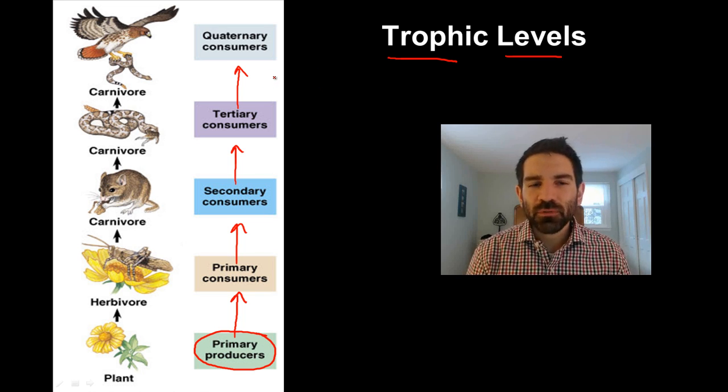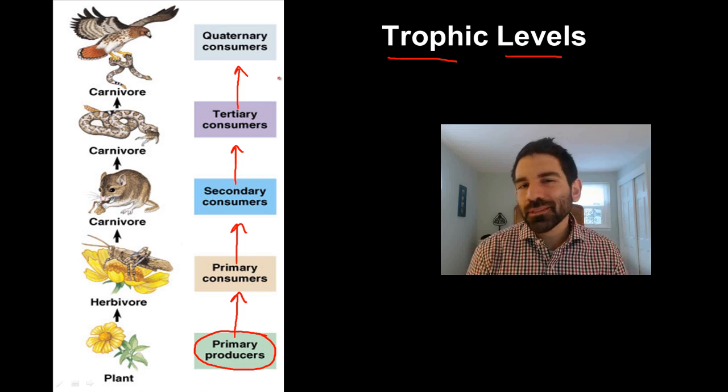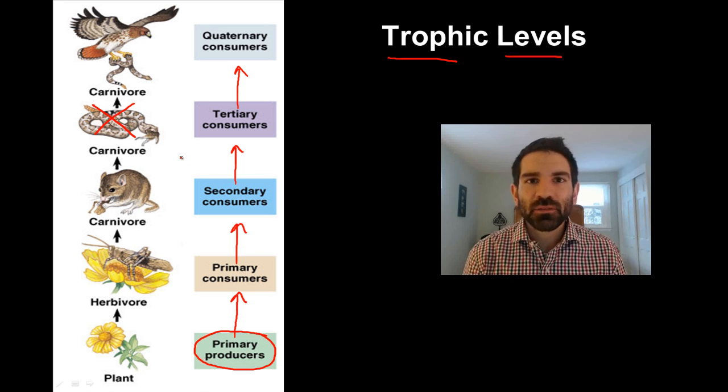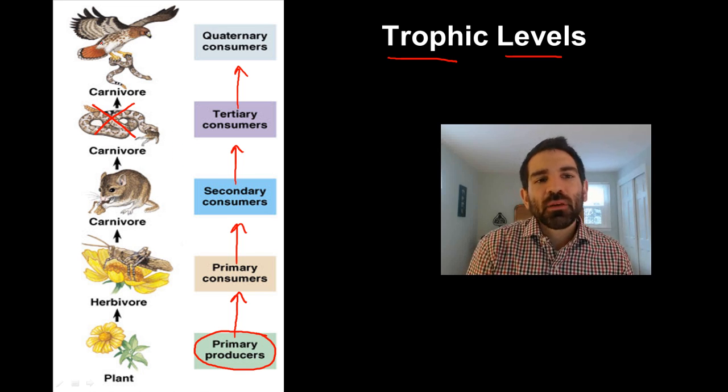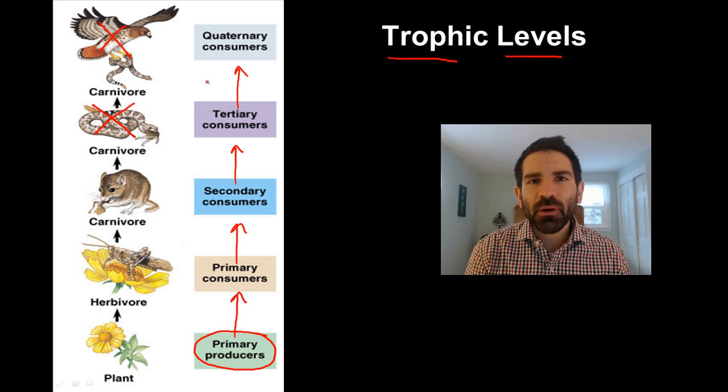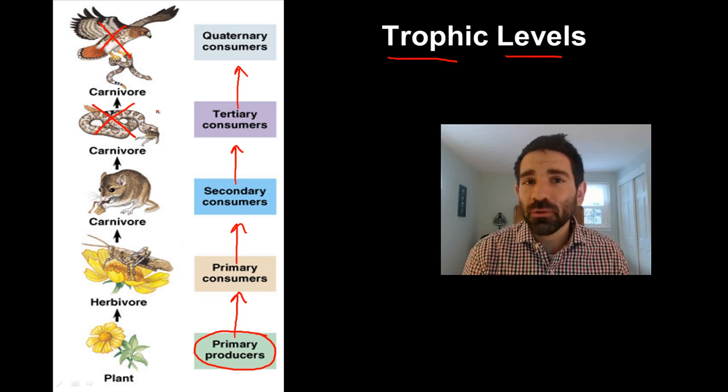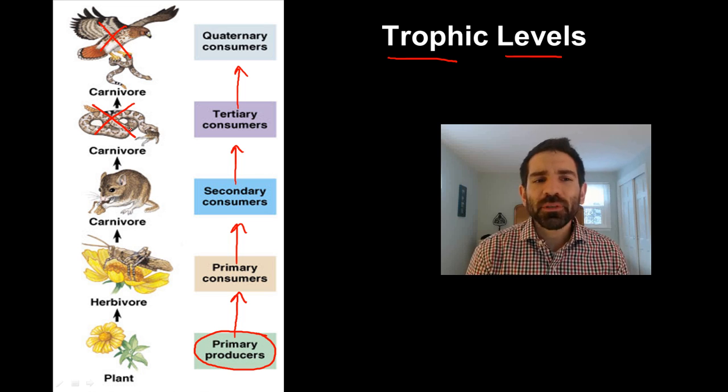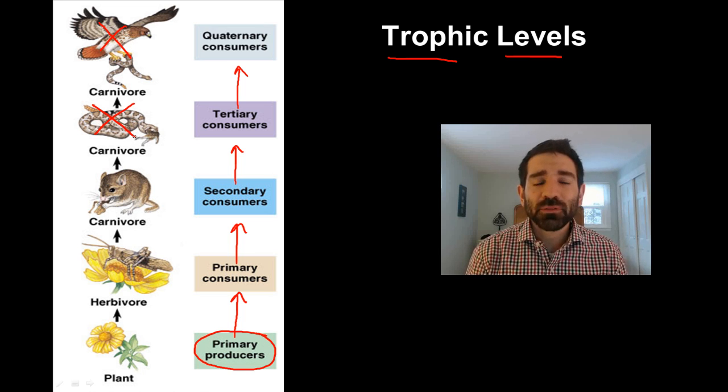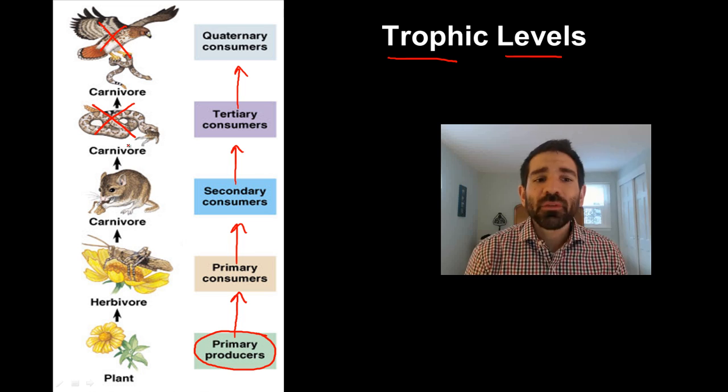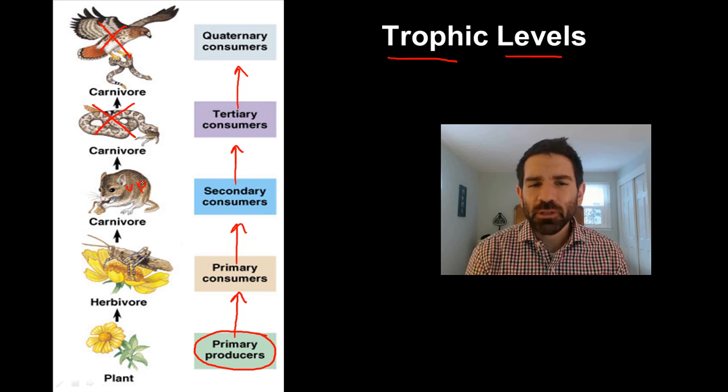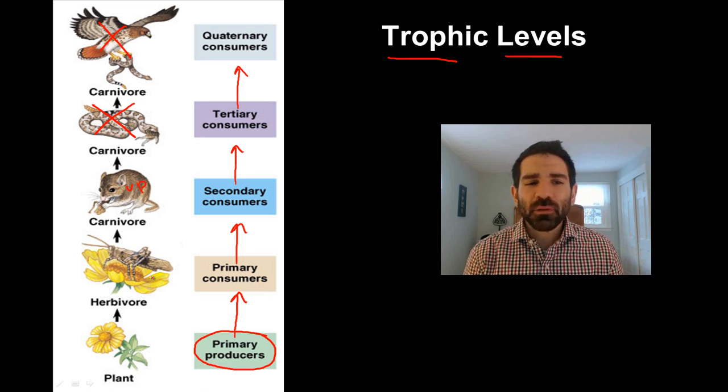One of the things you need to be able to do with a food chain is make some predictions. So let's say we go on a rattlesnake roundup and we kill off all of the rattlesnakes. What effect would that have? The first effect is that the birds of prey or the top carnivores will have no more food because there's no more rattlesnakes. They might go locally extinct. Now let's talk about the mouse population. The mice were being eaten by the rattlesnake. So no longer are they being eaten. Their numbers might go up. If the mouse population goes up, how's that going to affect the level below them?